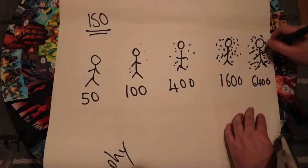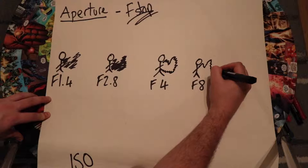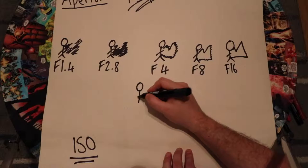Aperture, or f-stop — essentially how much light is going to come into the lens and hit the sensor. All you really need to know is that the smaller the number, the faster or shallower the exposure; the higher the number, the slower and wider the exposure. So if you want a nice blurry background go for a low number, and if you want a really detailed landscape go for a high number — just play in between.